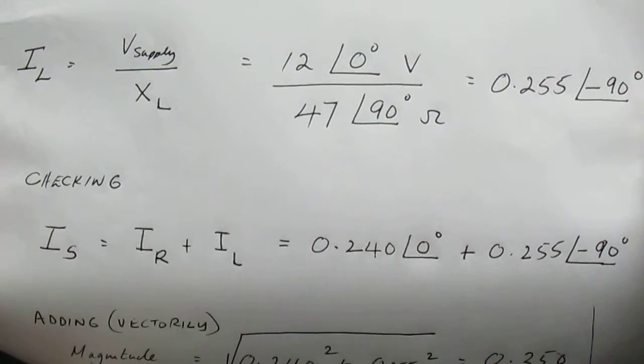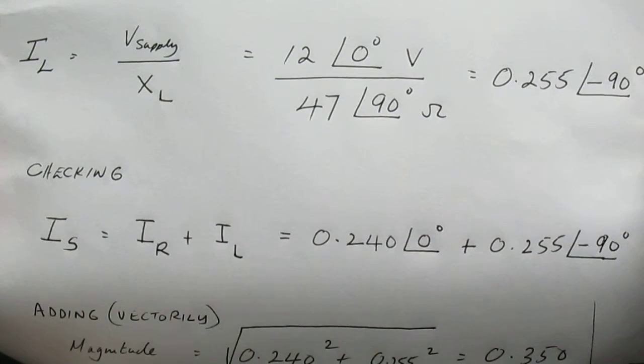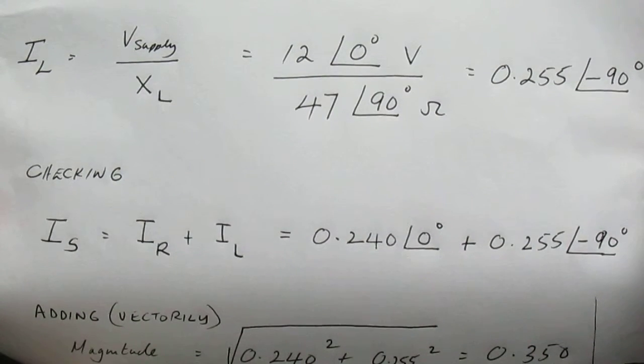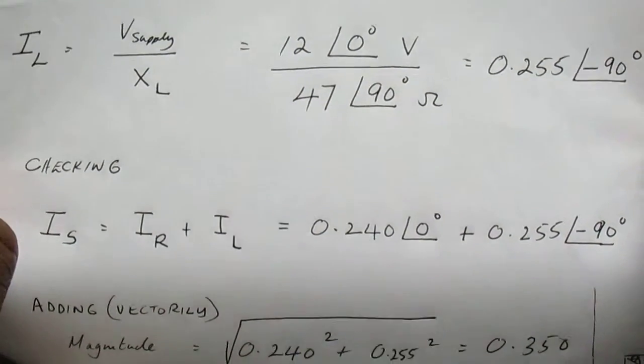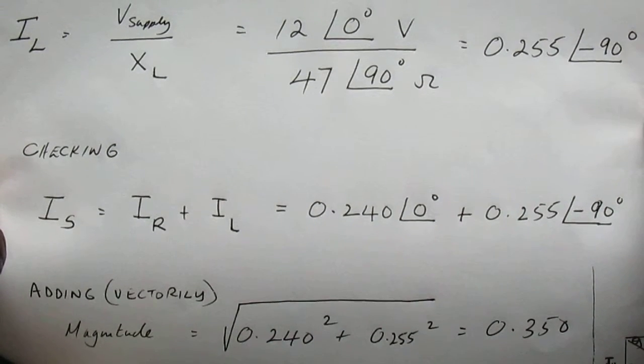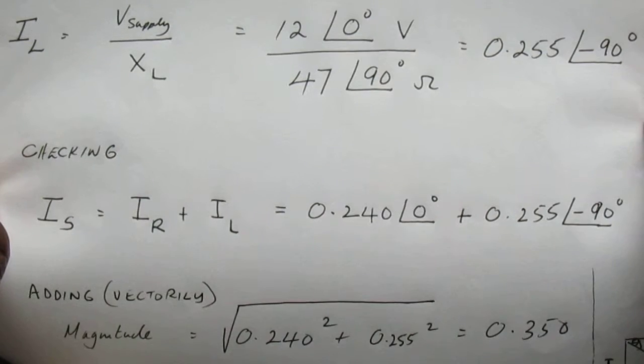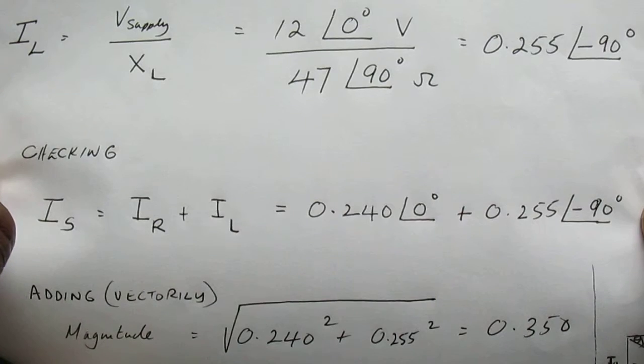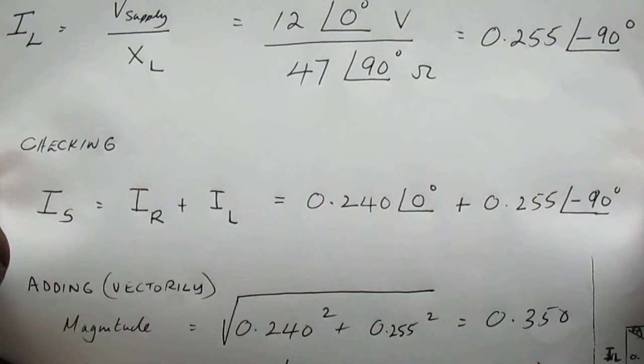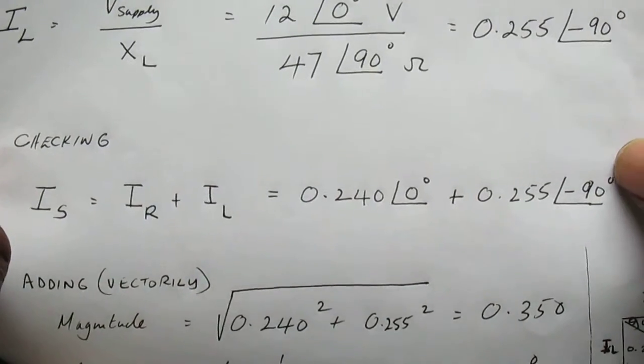Now we can check if the current through the resistor and the current through the inductor add up to the supply current. We need to add vectorially, so the supply current will be IR plus IL, which is 0.24 angle 0 amps plus 0.255 angle minus 90 amps.